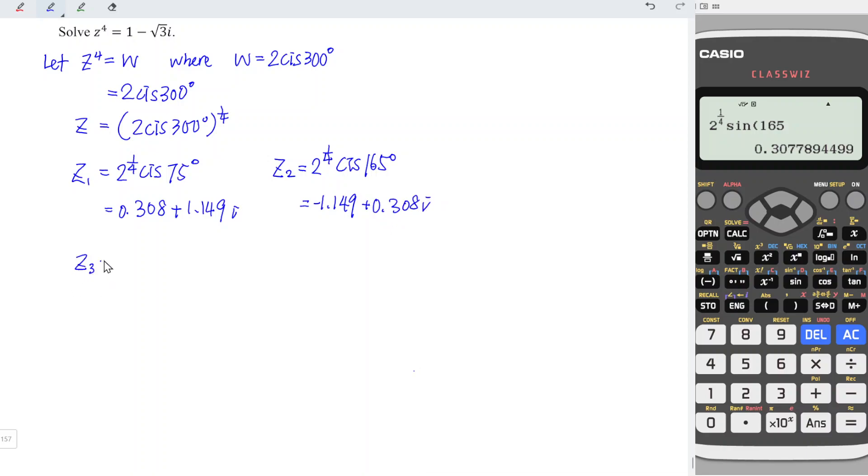And for the third root, using the same idea, we have 2 to the power of 1 over 4 cis. The angle should increase another 90 degrees. So 165 plus 90, which is equal to 255 degrees. And this is equal to, move back, and we should change the angle now to 255. So 255, this is equal to negative 0.308. And we should have, for sin, equal to negative 1.149i.